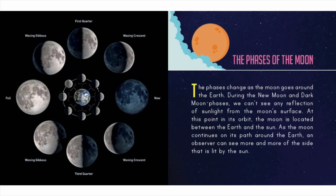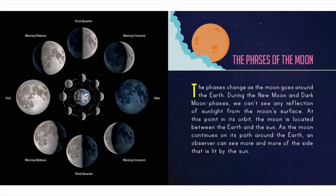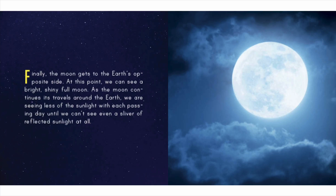The phases change as the moon goes around the earth. During the new moon and dark moon phases we can't see any reflection of sunlight from the moon's surface — at this point in its orbit the moon is located between the earth and the sun. As the moon continues on its path, an observer can see more and more of the side that is lit by the sun. Finally the moon gets to earth's opposite side, and at this point we can see a bright shiny full moon. As the moon continues its travels we see less sunlight each passing day until we can't see even a sliver of reflected sunlight at all.